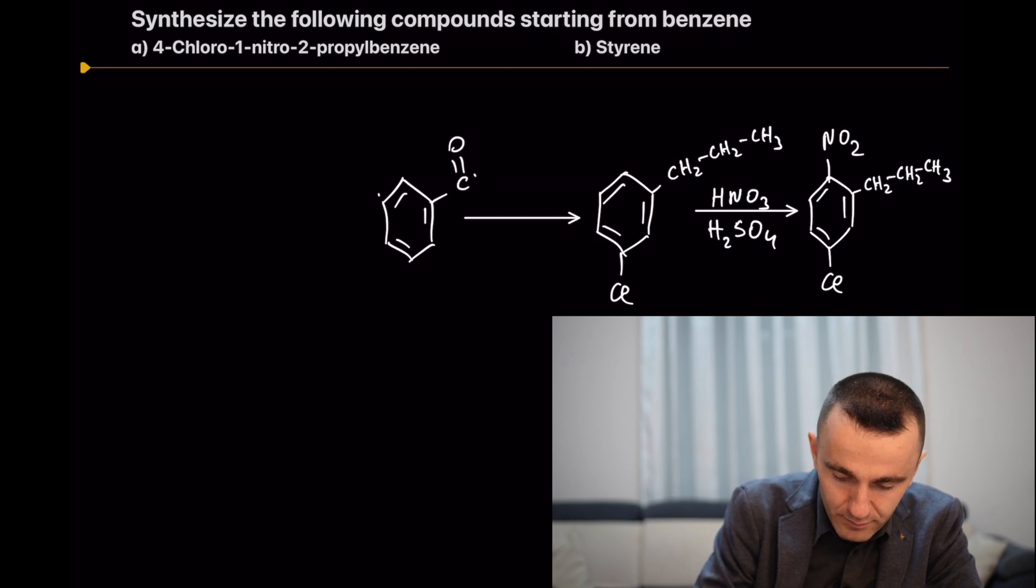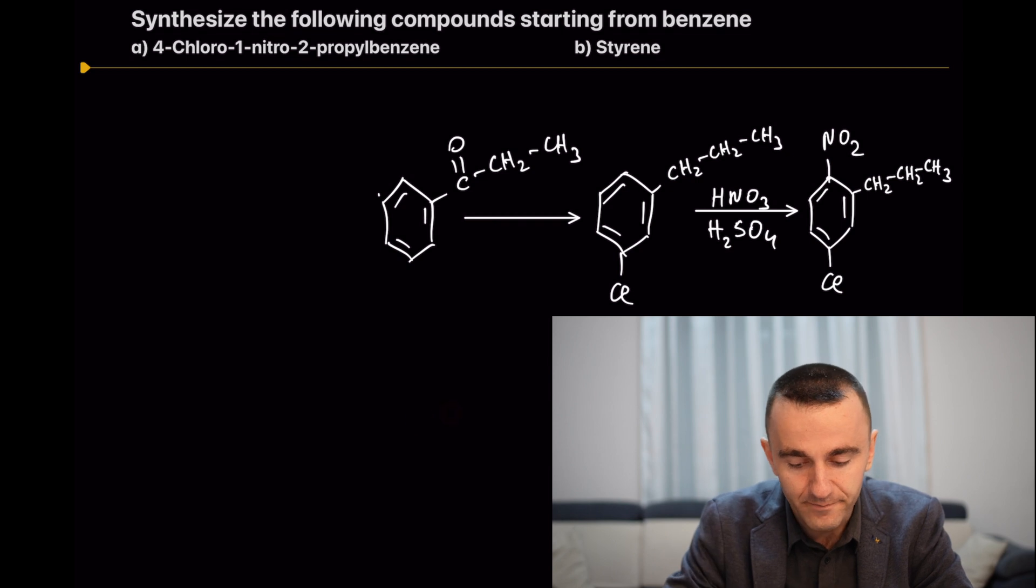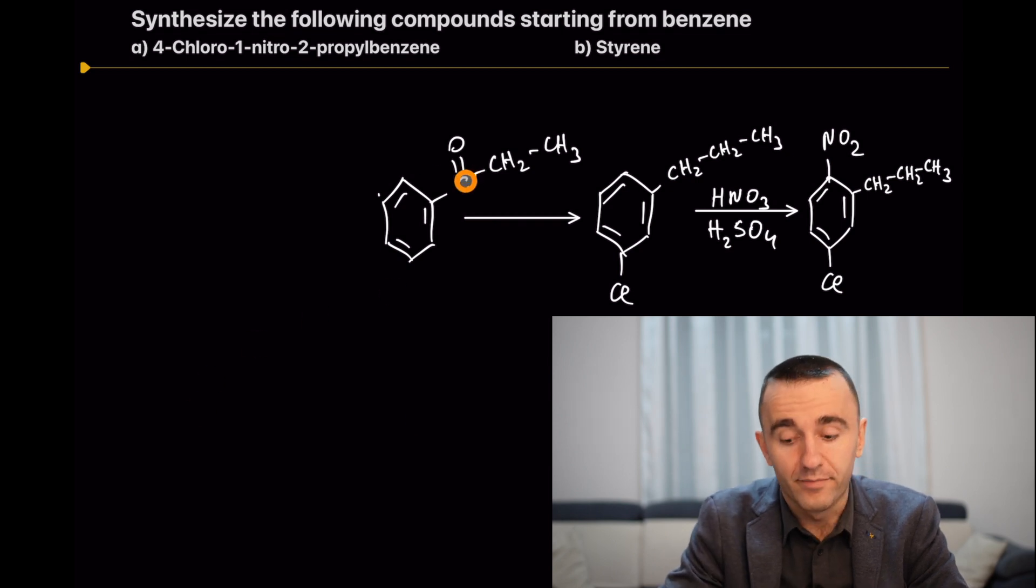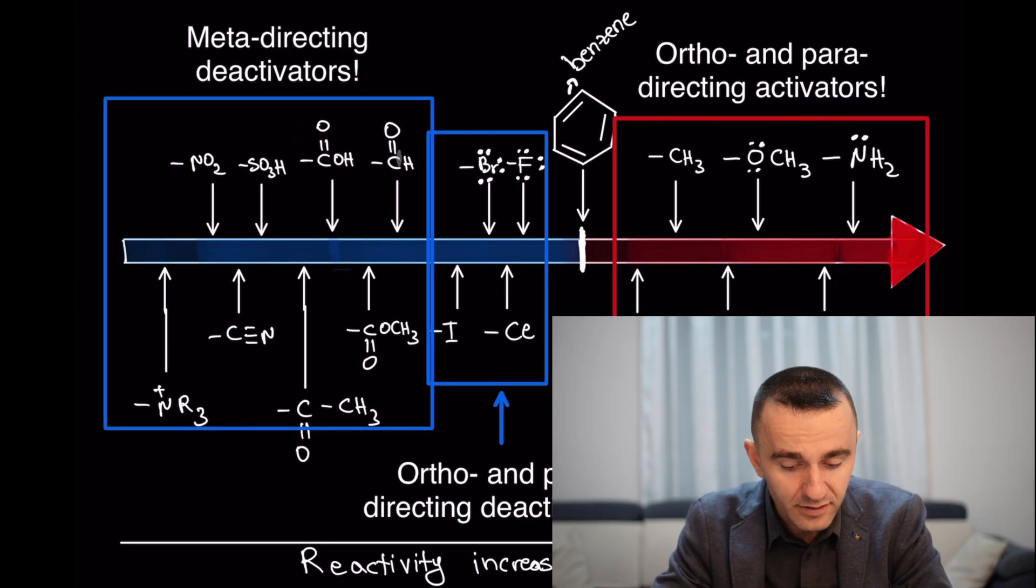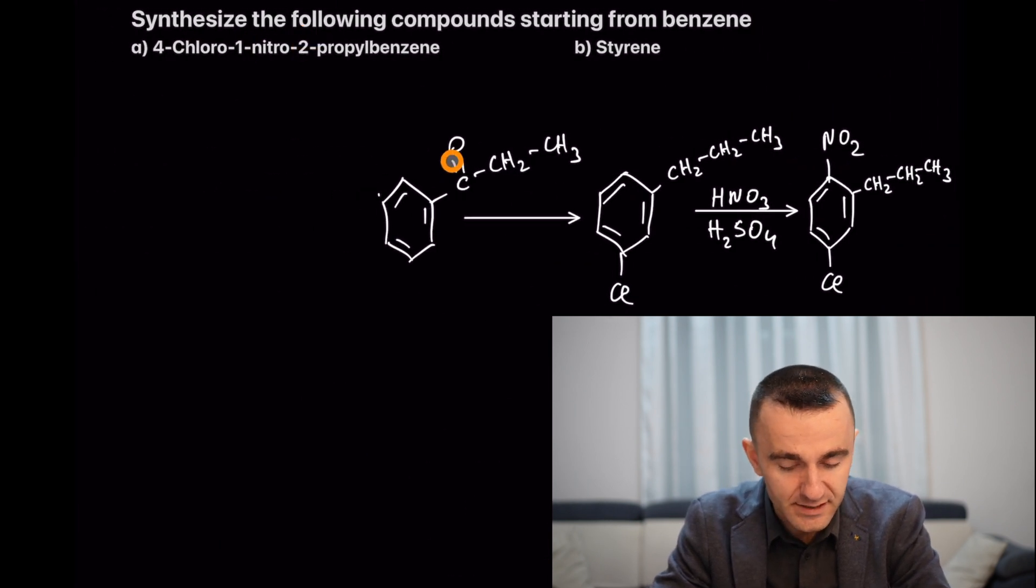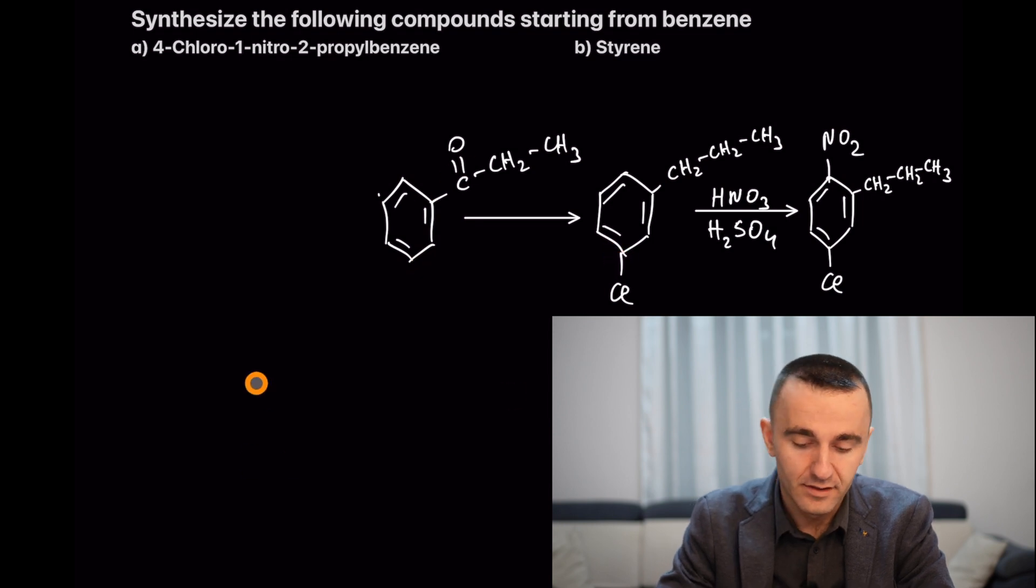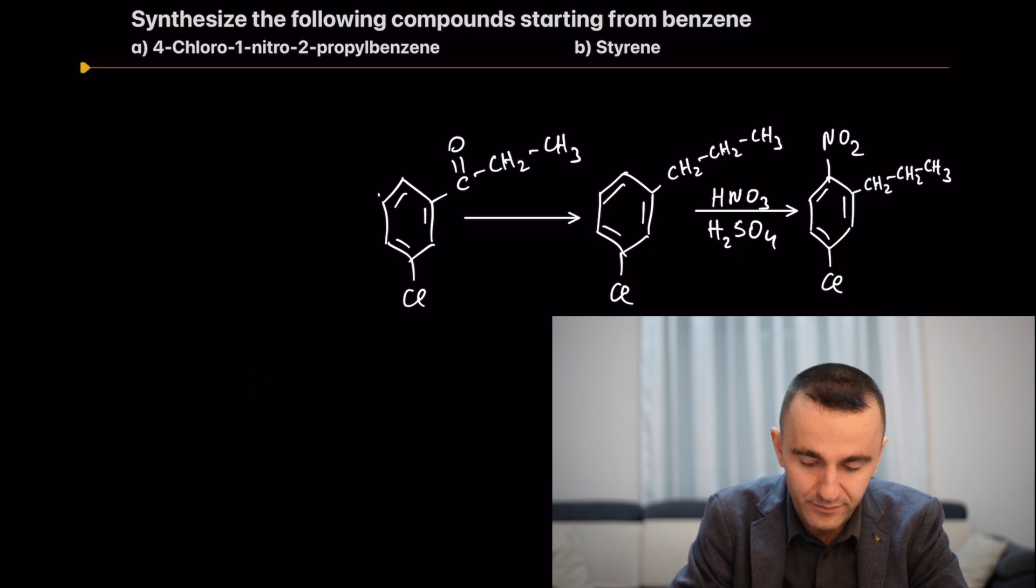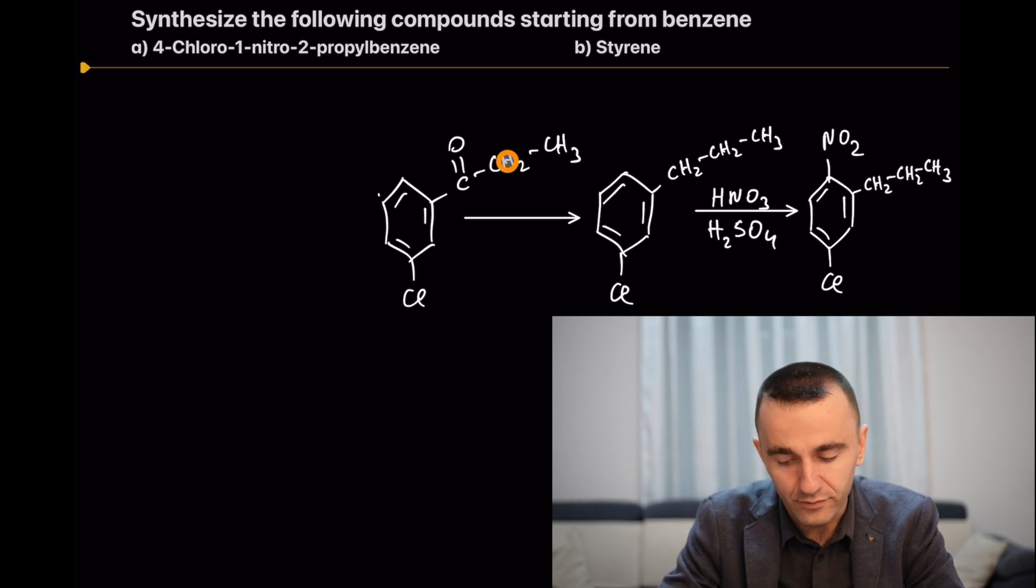Here you have this compound that contains a carbonyl group. We learned that carbonyl compounds orient in meta direction. In this case, this compound is going to be in meta, so you can place easily the chlorine in meta position. From here you have the chlorine here.